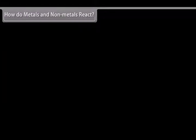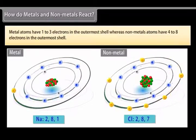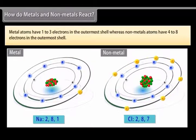How do metals and non-metals react? Metal atoms have 1 to 3 electrons in the outermost shell. Whereas non-metal atoms have 4 to 8 electrons in the outermost shell.